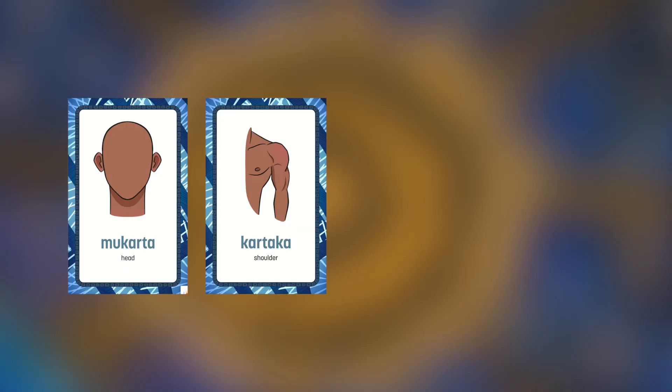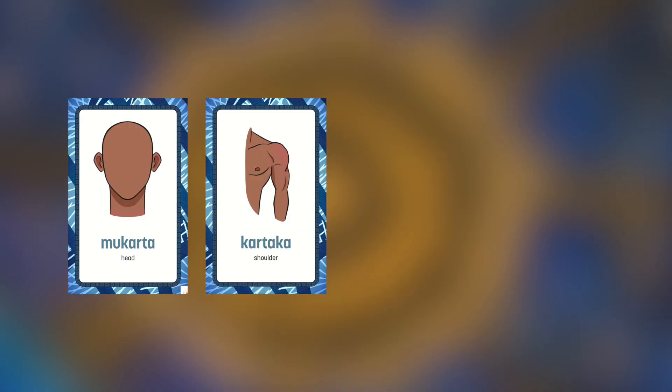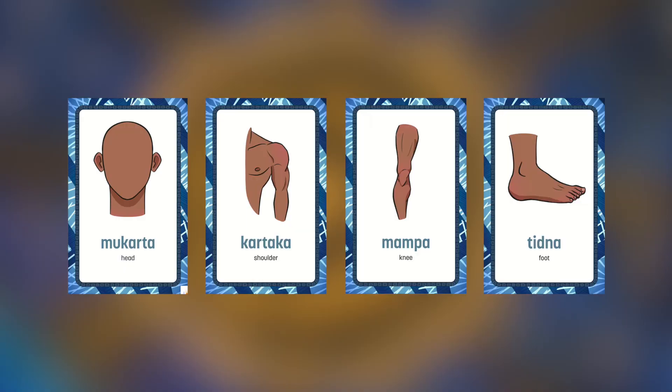Now that you've learnt some Kāna language for the body parts, you can sing heads, shoulders, knees and toes: mūkura, kādaka, māmba, tītna.